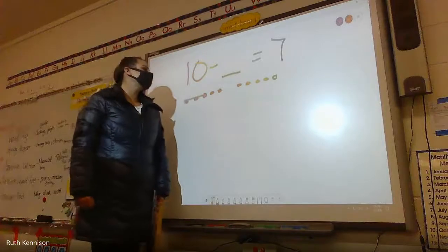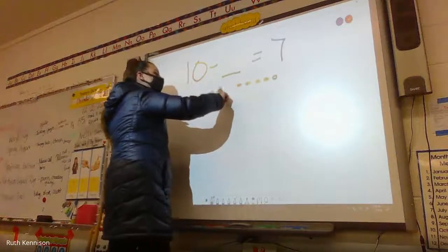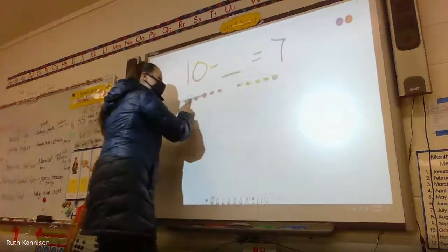All right. Kimberly, did you see how we did that? We said, okay, we drew ten. Then we counted one, two, three, four, five, six, seven. Because that's how many we had left and we crossed out the rest.